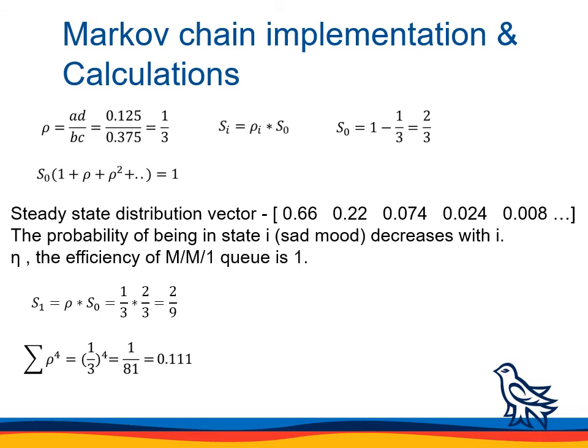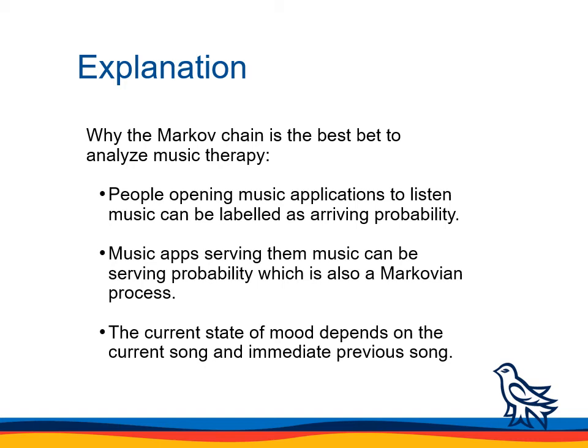For Markov chain implementation and calculations, we calculated more parameters and obtained the steady-state distribution vector that lists the probabilities in each state. Since we are using the MM1Q model, the efficiency is always one. For a Markov chain to work, we need three parameters: arrival probability, service probability, and the process should be a random process. People opening music applications to listen to songs can be taken as the arrival probability, and the music app serving music to users is the service probability — a random Markovian process. The current state of a person's mood while listening to a song depends upon the current song and the immediately previous song.